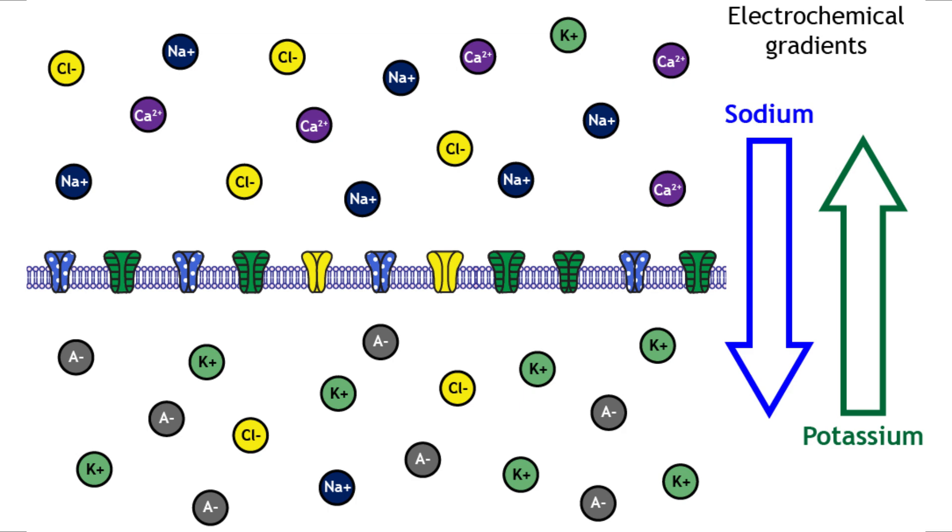Now what drives the ion movement? The unequal ion distribution creates these electrochemical gradients, which have two components, if you guys remember, from the previous video. The concentration gradient being the ions flowing from regions of high concentration to regions of low concentration, and the electrical gradient, meaning ions are attracted to regions of opposite charge and repelled by regions of similar charge.